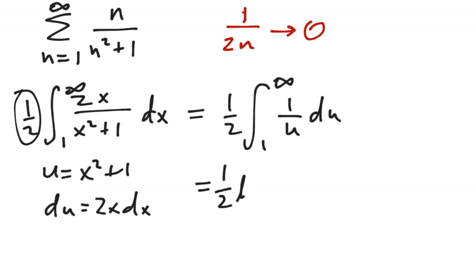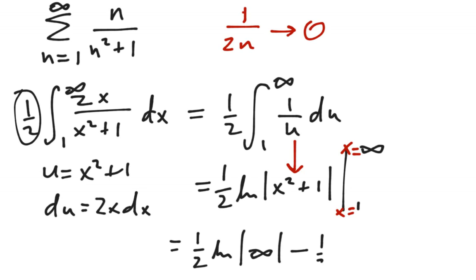So our answer is 1 half, natural log, absolute value, x squared plus 1, close that, and then evaluate it from 1 to infinity. Make sure, again, that if you're doing a u substitution, go back to the x's before you plug in the x values on your limits. Notice, now we will plug them in. 1 half natural log infinity minus 1 half natural log of 2. And notice, very clearly, that the natural log of infinity goes to infinity, and therefore this integral is infinite.